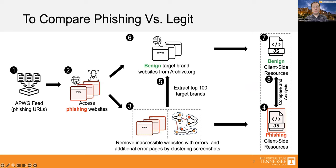To understand the dynamics between phishing and legitimate websites, we started by collecting data on phishing URLs from the Anti-Phishing Working Group, which is called APWG. Then, we collected benign target brand websites from the Wayback Machine, which contains crawled websites over decades. This method helped us to compare client-side resources between phishing and benign websites. Following this, we identified and analyzed the corresponding target brand websites to scrutinize the client-side resources employed.